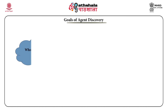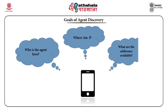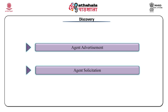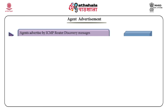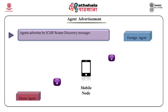First, let us discuss what is discovery. In this phase, the mobile node identifies that it is in the foreign network and searches for home agents and foreign agents. It can be done in two ways: agent advertisements and agent solicitations. People who have studied networking are familiar with this, as it is the process the internet node uses to search for routers using the ICMP router discovery protocol.